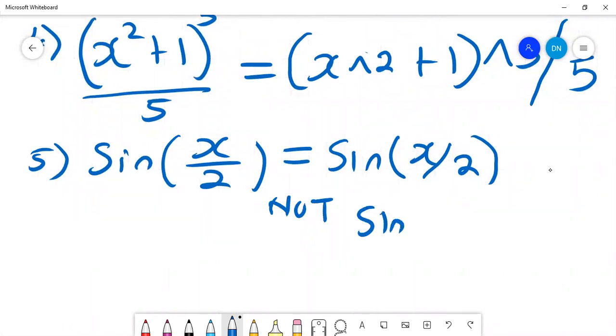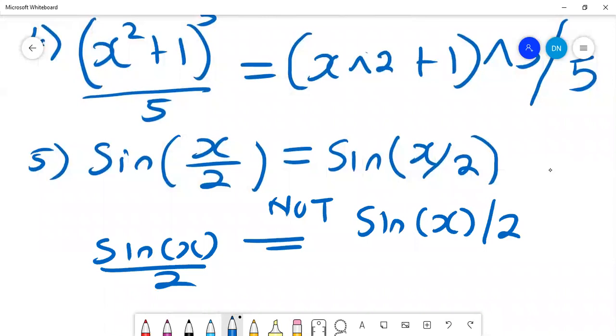These are two different equations. Let's accept that. This will be equal to sine(x) over 2. This is not equal to x over 2, it is sine(x) over 2. And sine(x) over 2 is not equivalent to sine of x over 2. Those are two different equations.